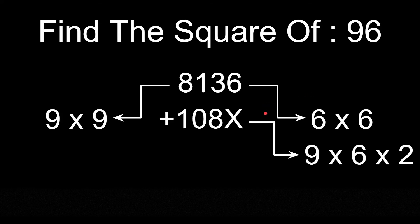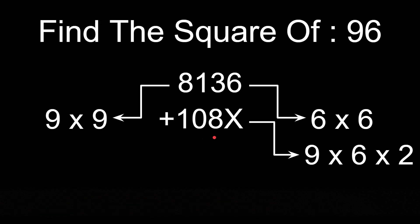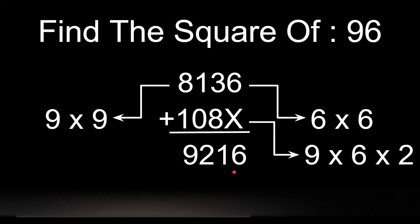So 9 into 6 is 54, into 2 is 108. And we have added it from the 10th place leaving the unit's place as x. And then our final answer is 9216.